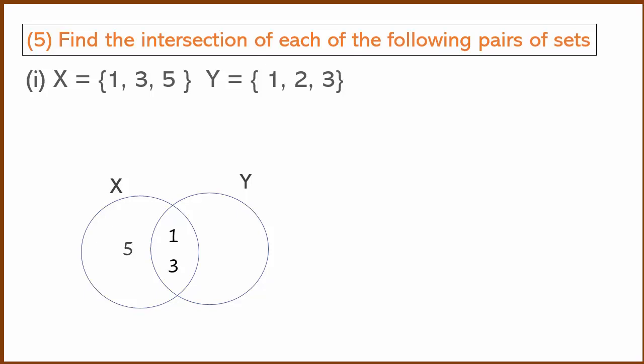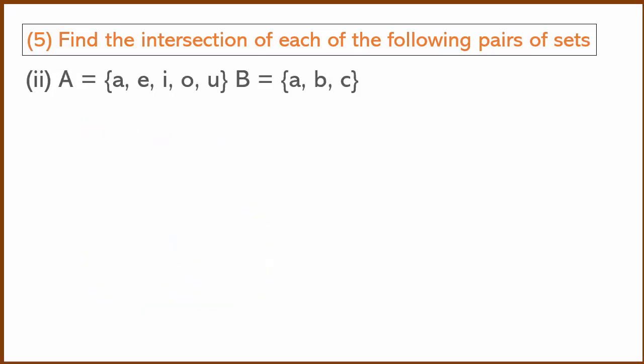Now checking Y's elements: 1 is common area already, 2 is only in Y, and 3 is common area already. So the intersection X ∩ Y = {1, 3}, which are the elements common to both X and Y.